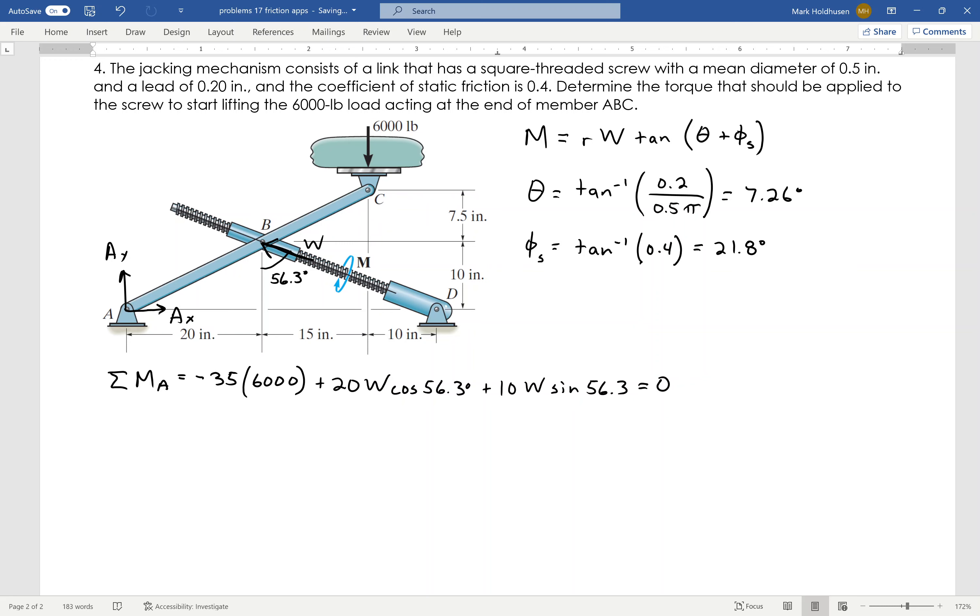So from this, I can calculate W. And I find W equals 10,807 pounds. So that is the force going through the screw.